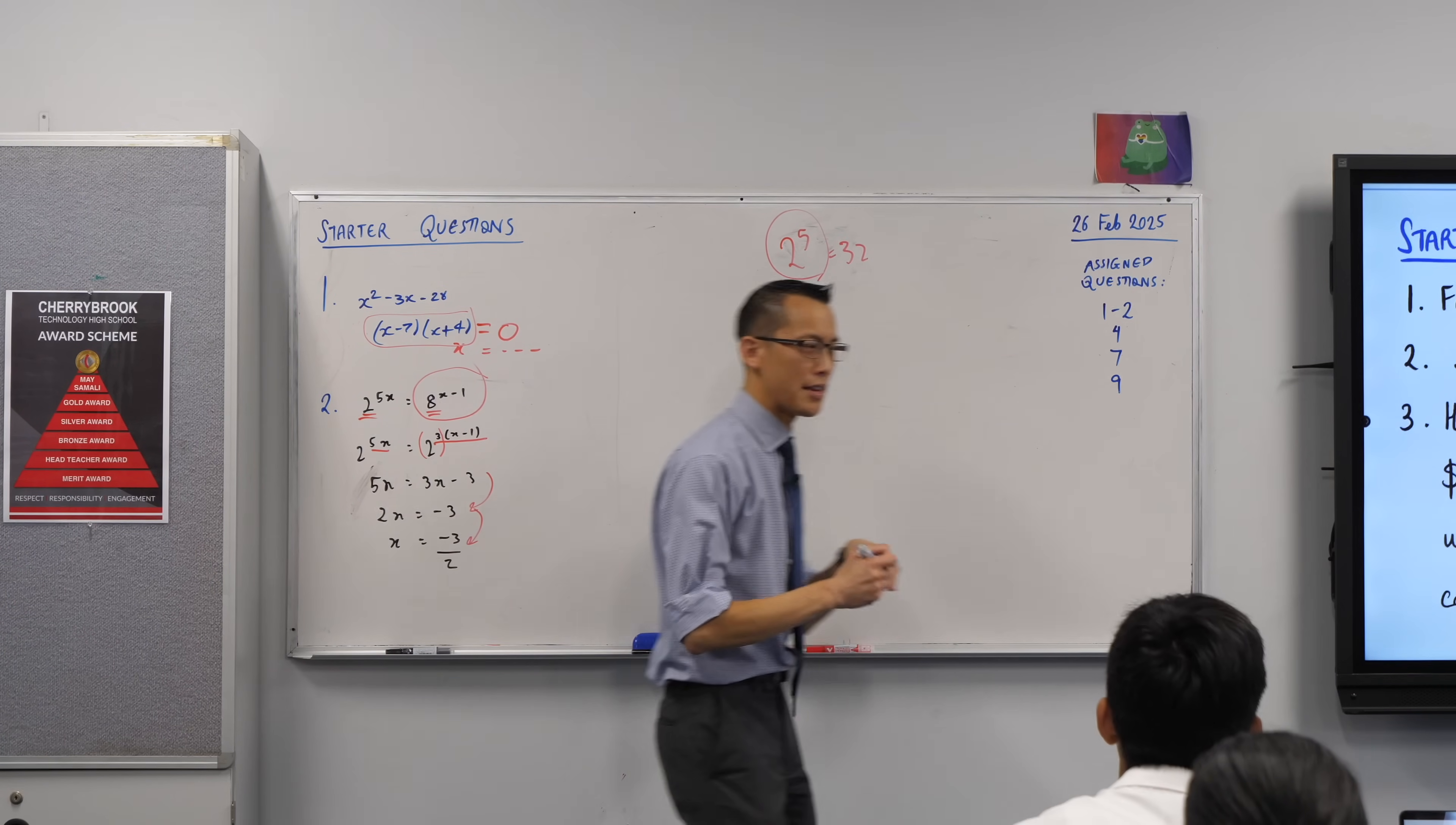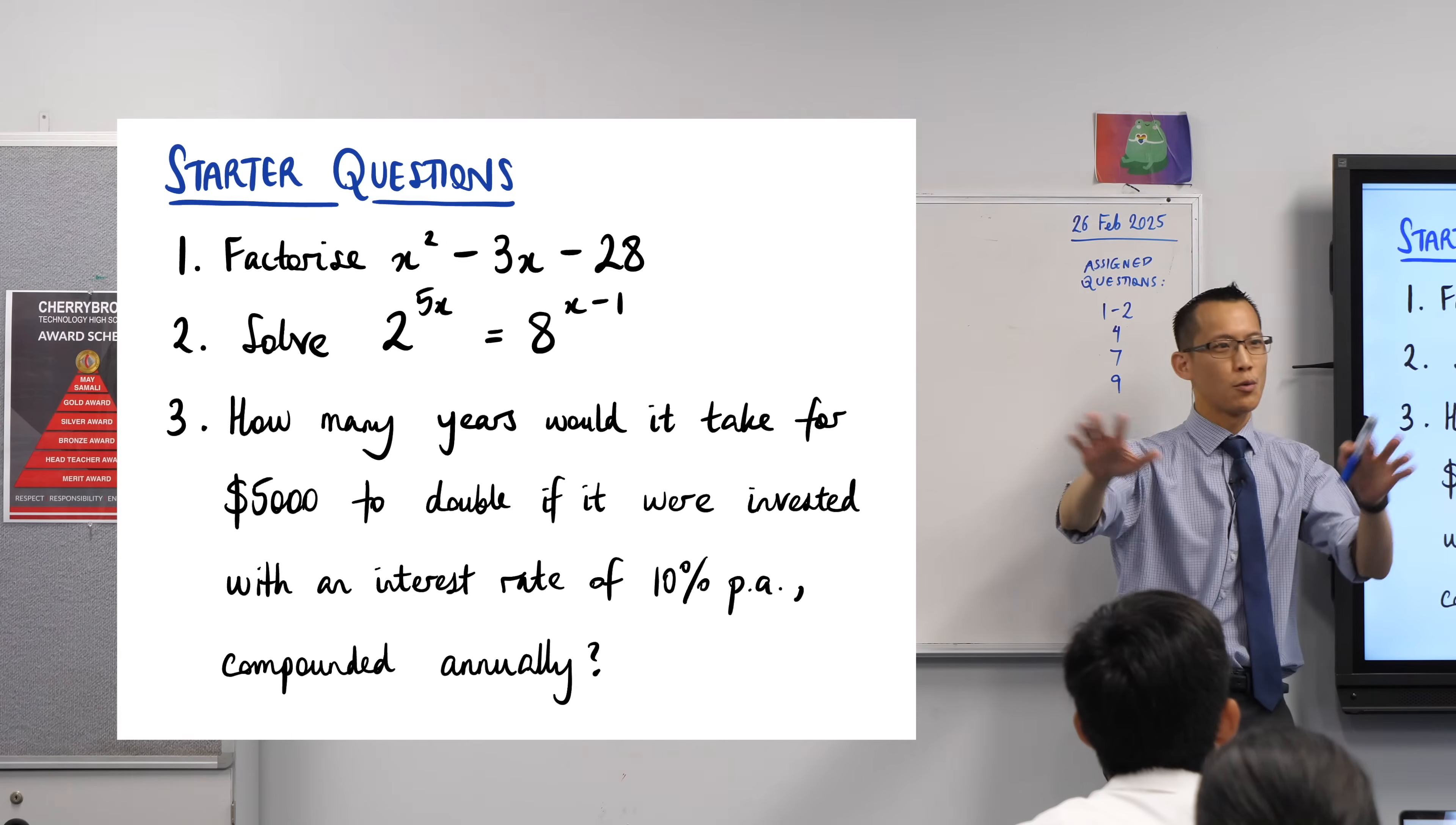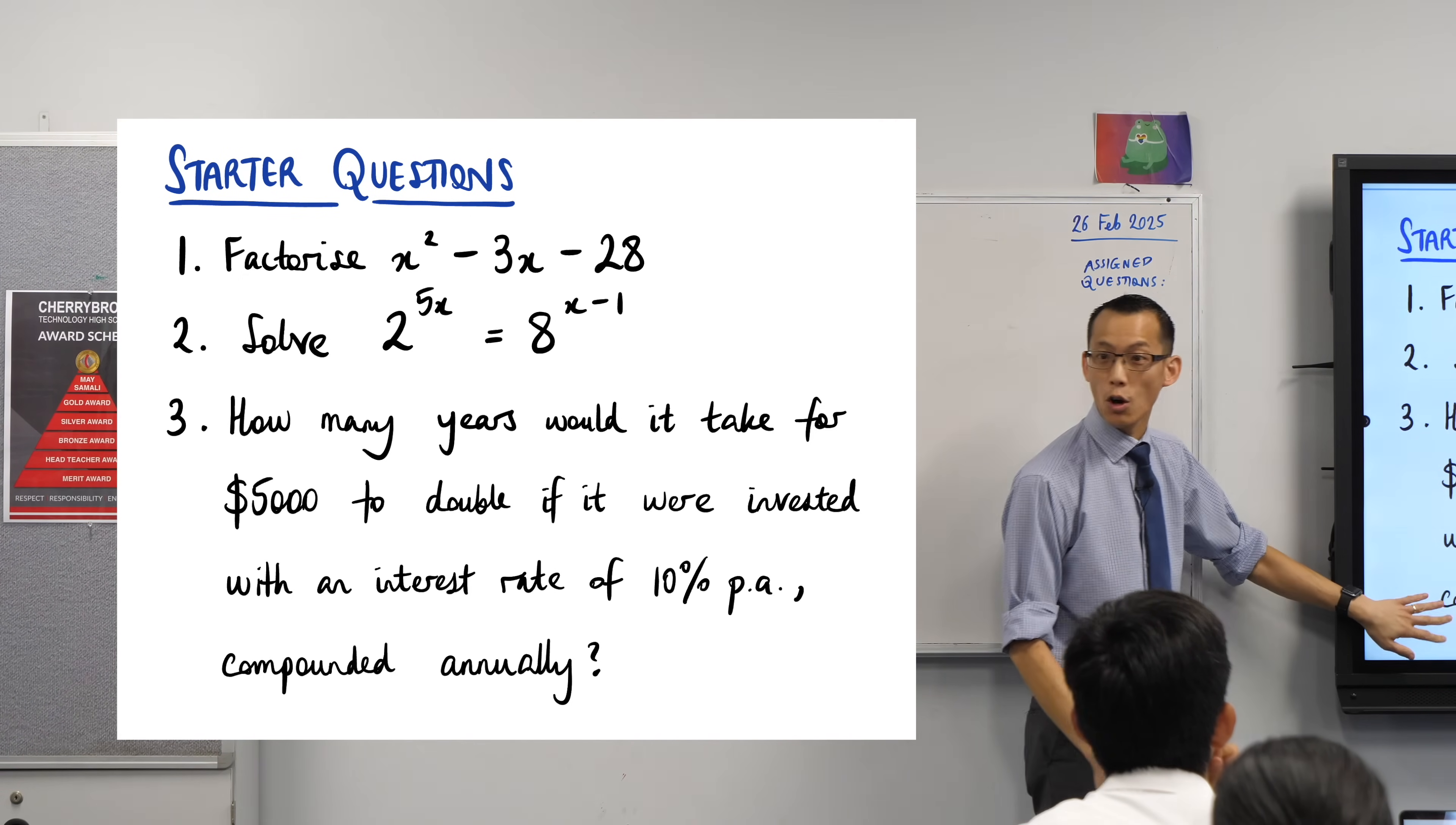Now I didn't ask anyone to write up the answer for 3, because there was this ambiguity about how do we phrase the answer. Who put some decimal places on their answer? A few people? Who just left it as a whole number? About the same number. Now, because I didn't phrase it, no one's right or wrong here. But I'll give you an opinion as to what I think is most sensible in this situation. It says, how many years would it take for $5000 to double? And then I gave you this information.